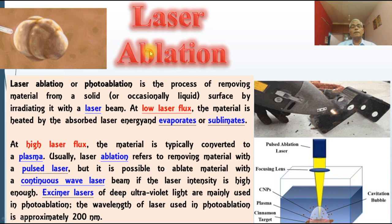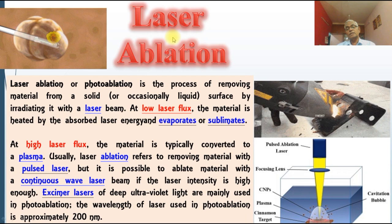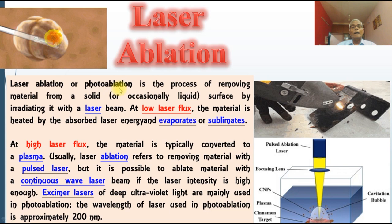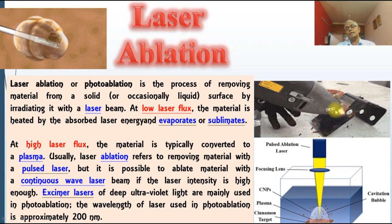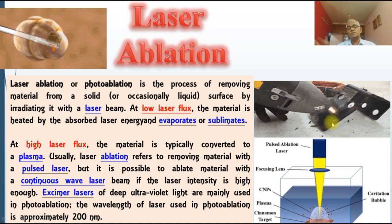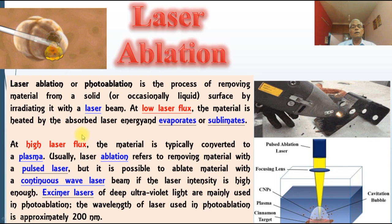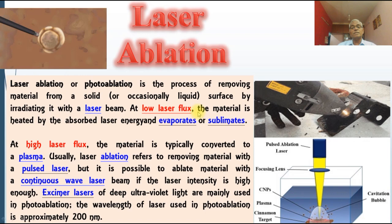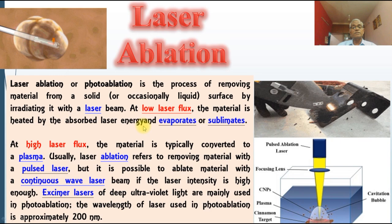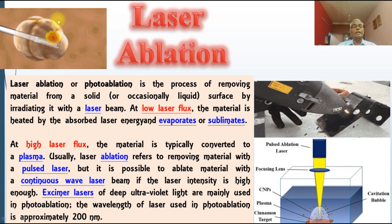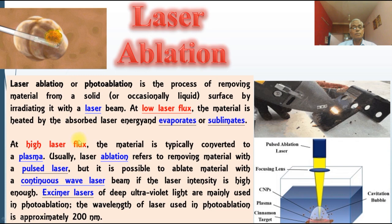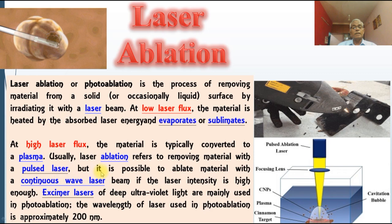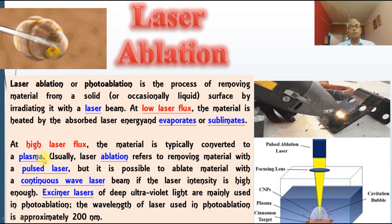The fifth method is laser ablation — also called photoablation — which is the process of removing material from a solid surface. In welding, scraping creates scratches, but with ablation the surface layer can be removed cleanly. At low laser flux, the material is heated by absorbed laser energy and evaporates. At high laser flux, it sublimes. In medicine, laser ablation is used to remove tumors inside the body. It is possible to ablate material with either a pulsed laser or a continuous wave laser.